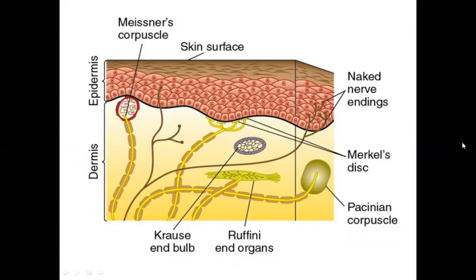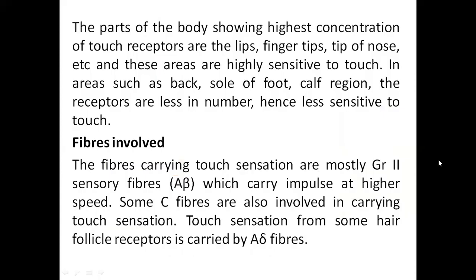This diagram shows the location of the different receptors. Meissner's corpuscles lie in the dermis, Merkel's disc are located just below the epidermis, Pacinian corpuscles and Ruffini end organs are located in the dermis, and the free nerve endings are located in the epidermis around the hair follicles. The parts of the body showing the highest concentration of touch receptors are the lips, fingertips and tip of nose, making these areas highly sensitive to touch. In areas such as the back, sole of foot and calf region, receptors are fewer and hence less sensitive.